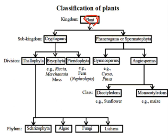This plant kingdom is primarily divided into two sub-kingdoms. One is called Cryptogames, that means non-flowering plants. And another is known as Phanerogames or Spermatophyta, that means flowering plants.